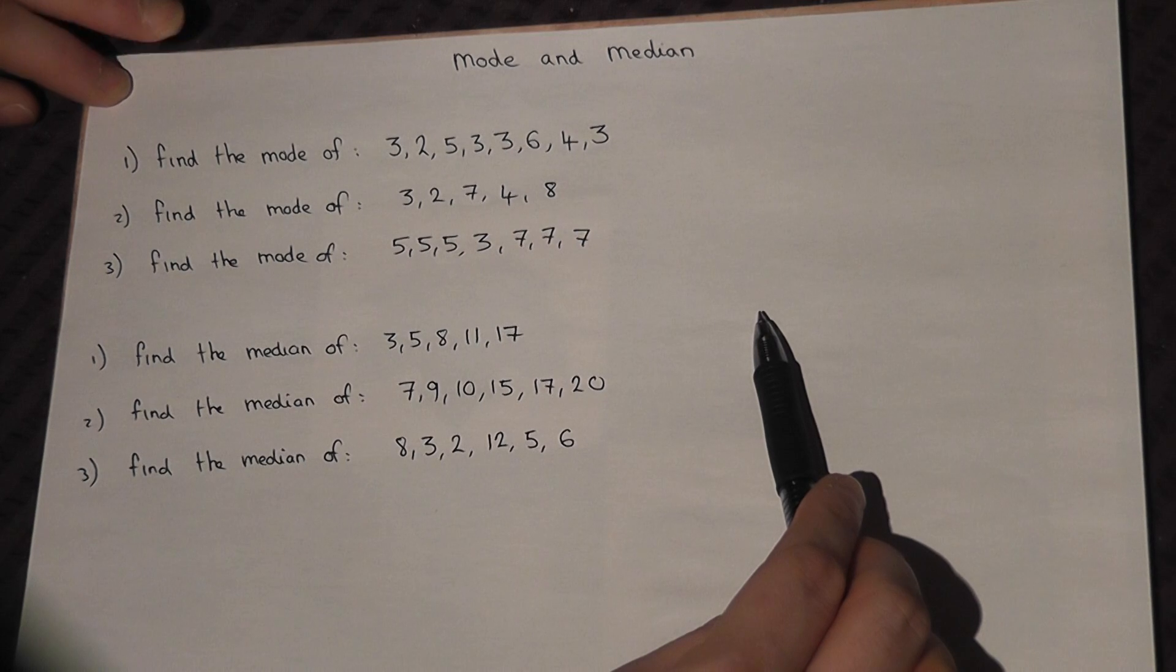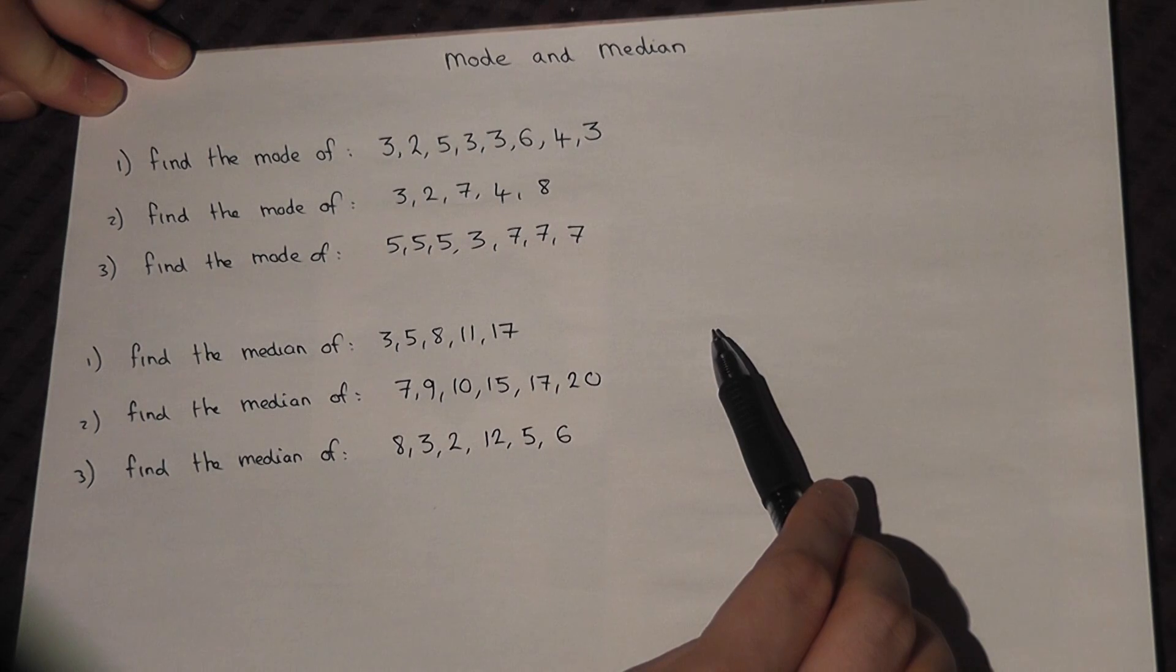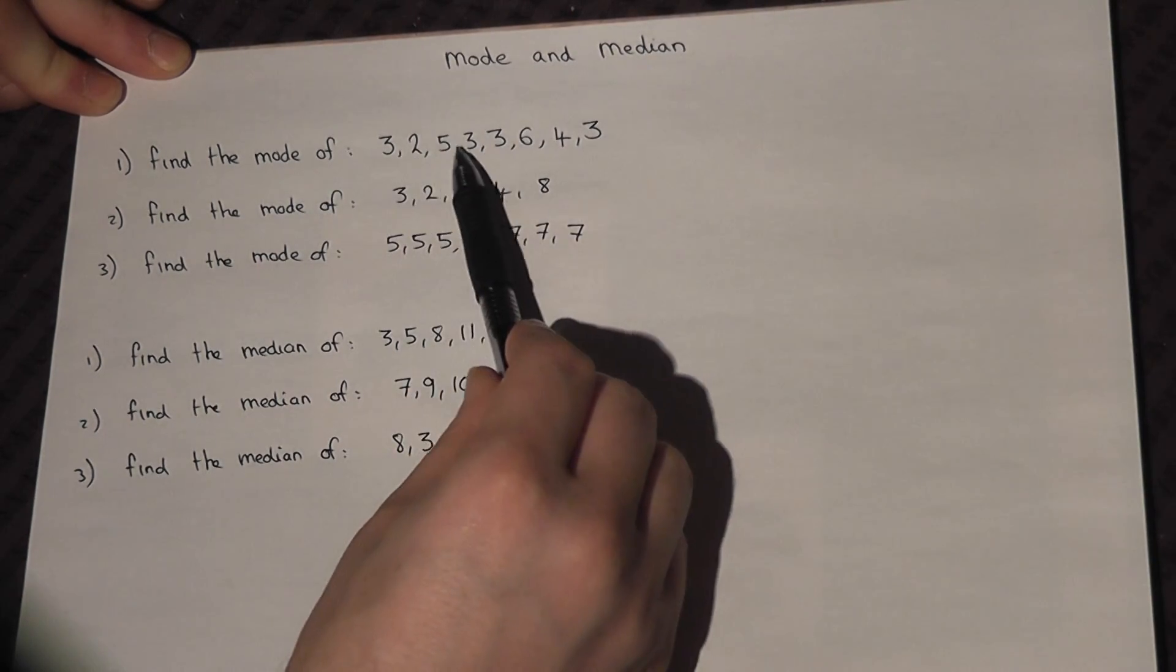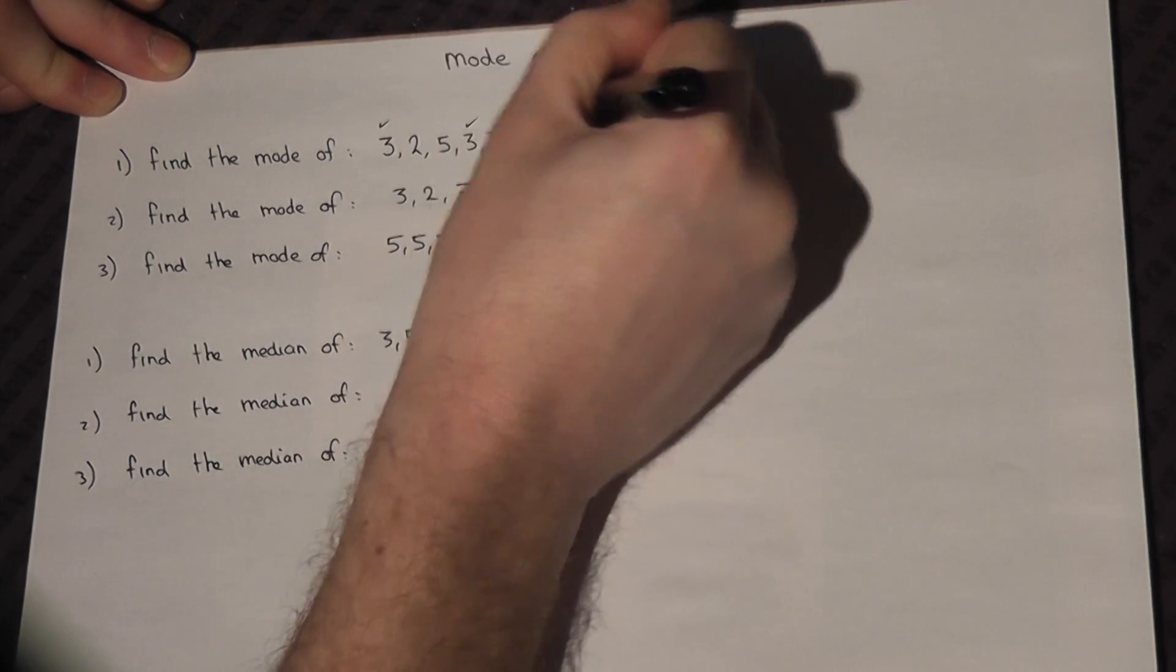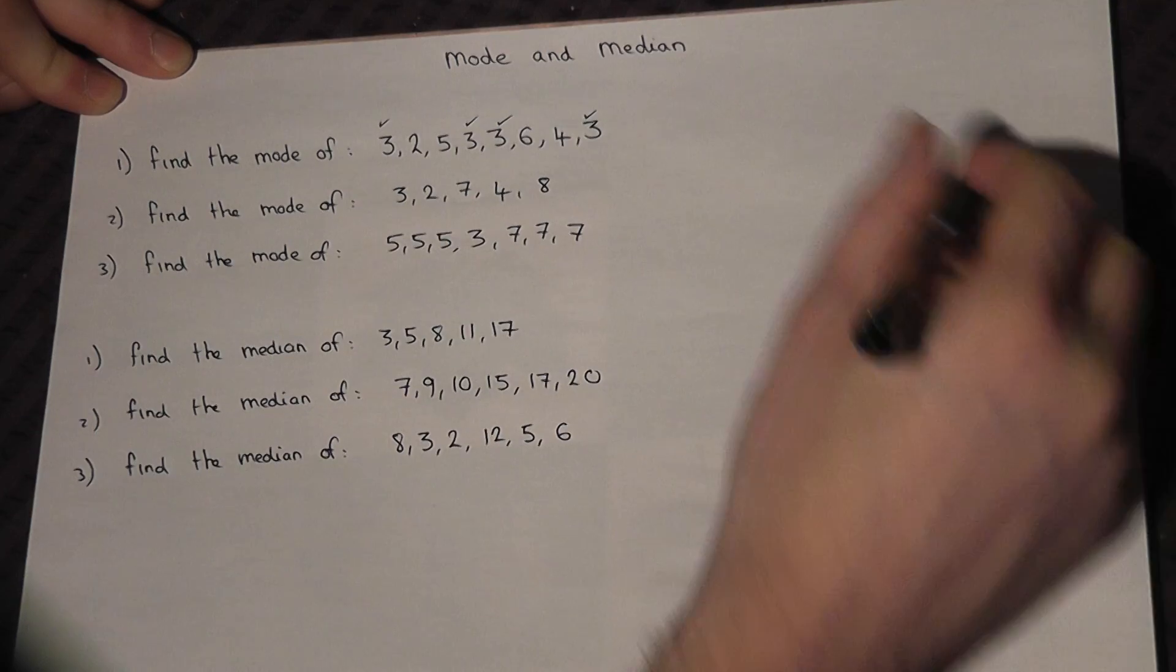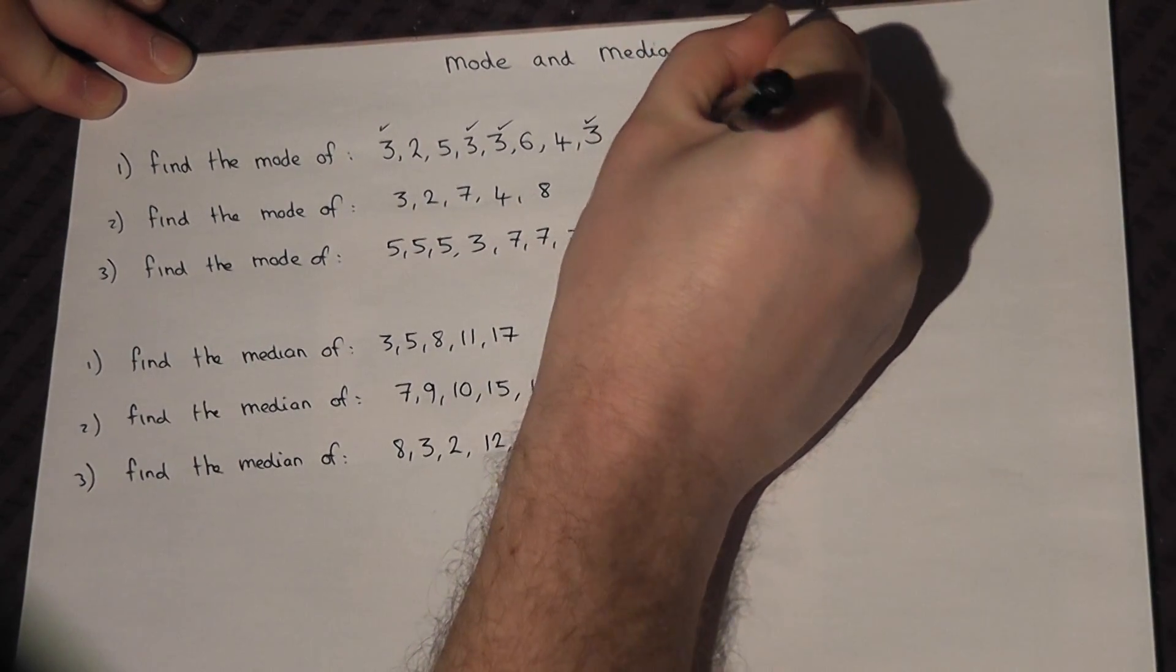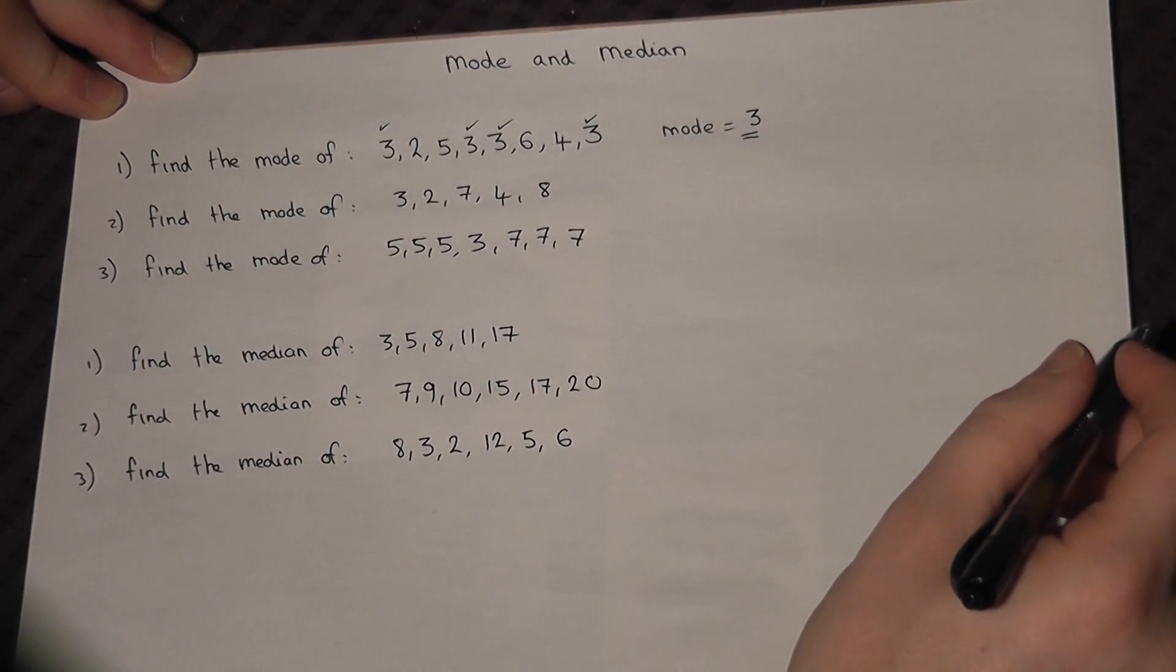The mode is the most frequent number in the data. So if you want the mode of this data, then quite clearly the 3 occurs most frequently. So the mode is equal to 3. It occurs 4 times.